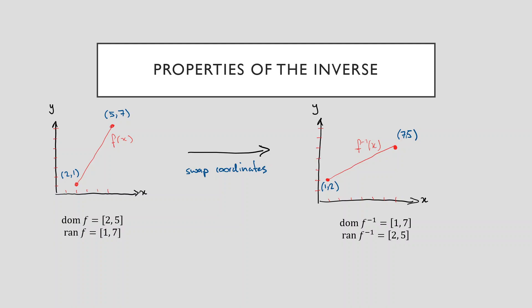Now, in order to obtain the graph of the inverse, I'm simply going to swap the coordinates around at all points along this original line. So let's start with this endpoint here — we've got two, one. Let me swap those coordinates around and I end up getting one, two. So that point from our original graph turns into this point on our inverse. We'll do the same thing for our right-hand endpoint. Original coordinates are five, seven. To obtain the graph of the inverse, I swap them around, and now I get seven, five, which corresponds to this point here. Now if I started off with a straight line, you should end up with a straight line after you perform this particular kind of transformation. So if I have this endpoint here and this endpoint here, I just draw a straight line between them, and that's the graph of our inverse.